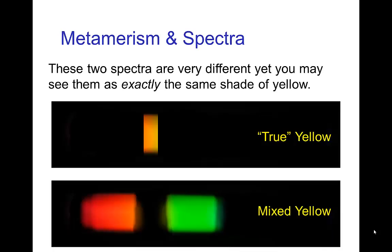This introduces some interesting visual effects, the first one being metamerism. When we see something as being yellow, it's possible we're seeing true yellow — meaning we're just seeing yellow photons. But it's actually more likely that when we're seeing yellow, we're seeing a mixture of red photons and green photons. These two spectra could not just both look like yellow, but they could look identically the same yellow.